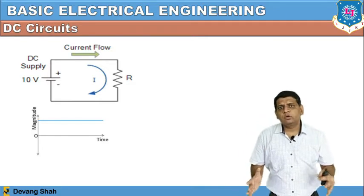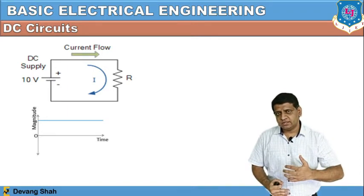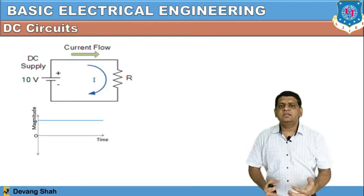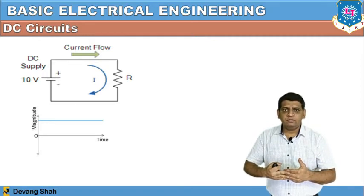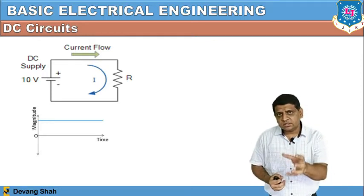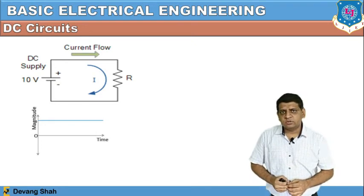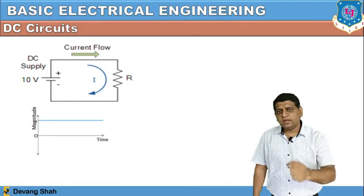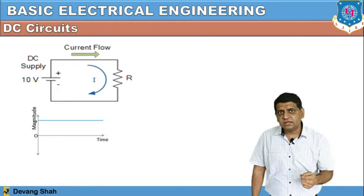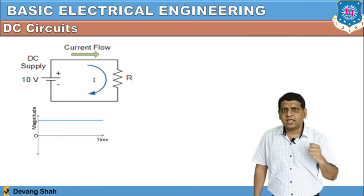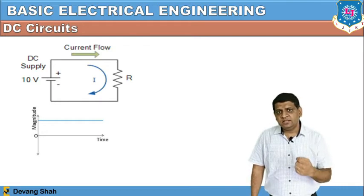Here we are going to take resistance, inductor, and capacitor as circuit elements and apply AC voltage or DC voltage. In this unit we are learning about the DC circuit. We will connect resistance in a circuit and apply DC voltage across it. Once you connect resistance, inductor, and capacitor under the DC biasing or DC excitation condition, you need to check the behavior of each component.